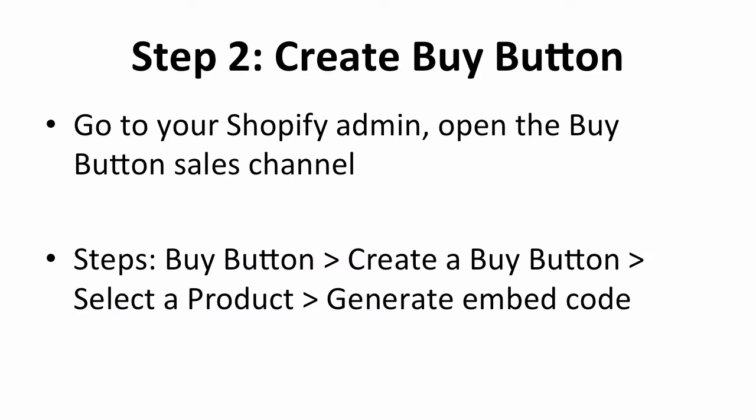After you've added the sales channel to your Shopify admin, you can now create the buy button. To do so, go to your Shopify admin page and open the buy button sales channel. When you are on the buy button sales channel page, go to the top right and click on create a buy button. After that, you will be directed to the product page. Select the product that you wish to create the buy button for and then move on to the next step.